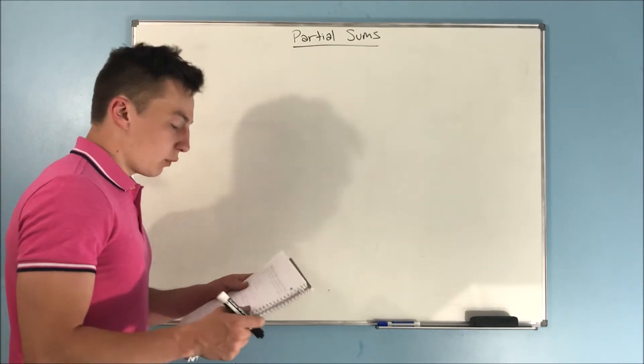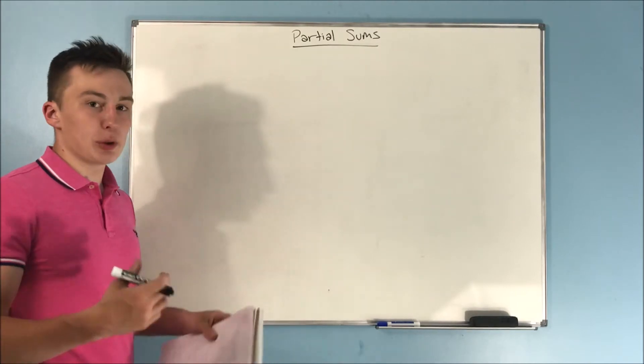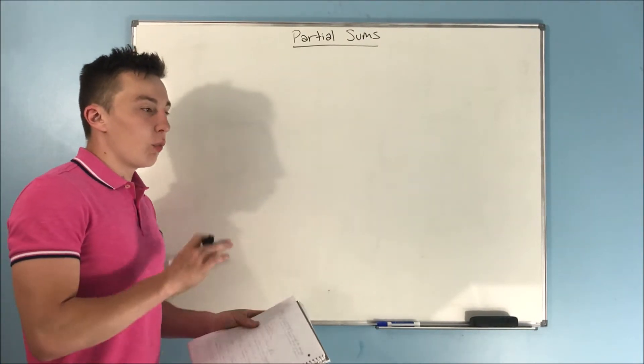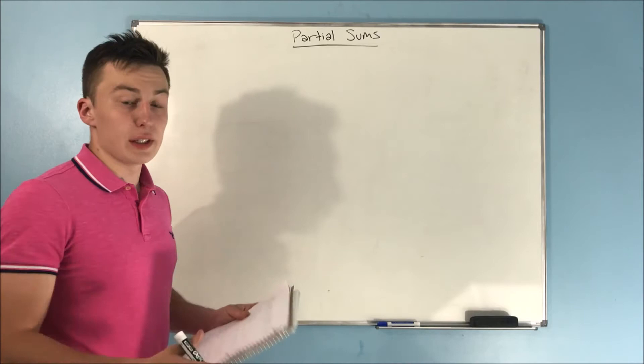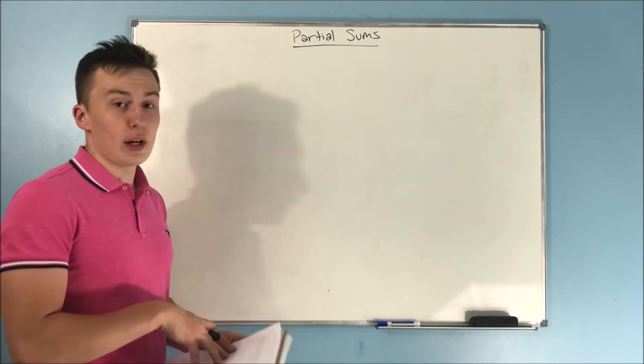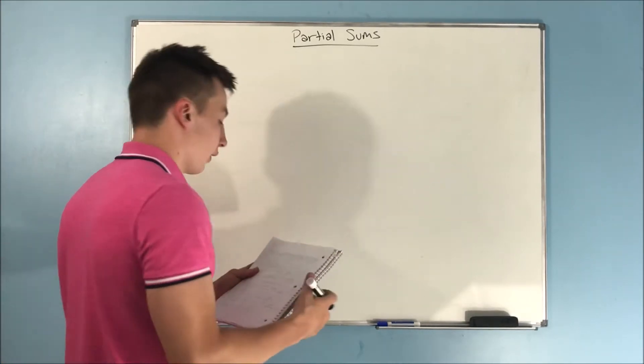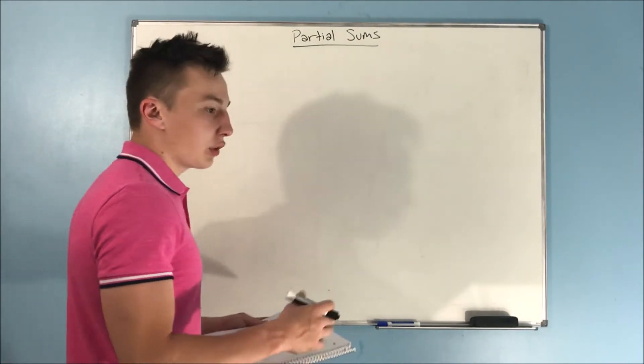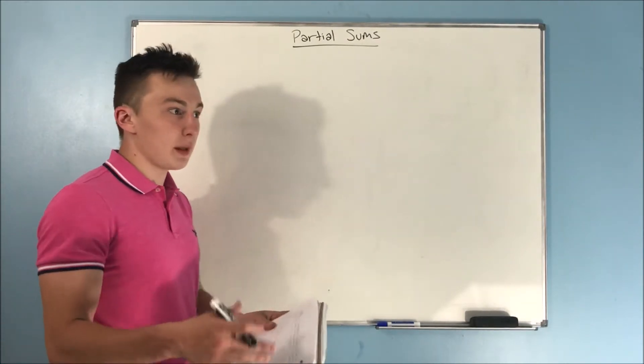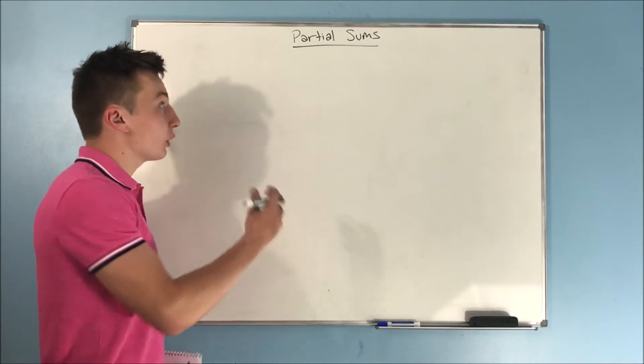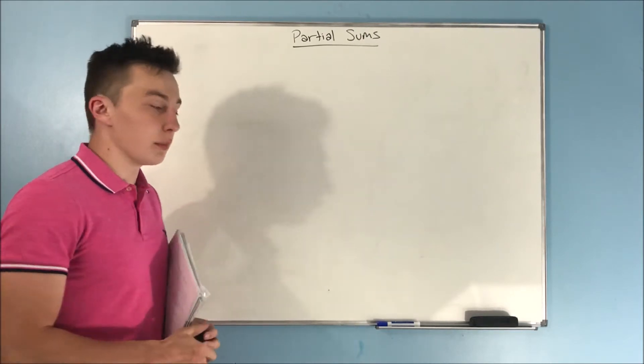So in the last video, we did some conceptual work. We figured out what we're looking for as far as infinite series goes, we understood the whole concept behind convergence and divergence. And now we're going to talk about ways to prove something is convergent or divergent. And one of those ways is with partial sums.